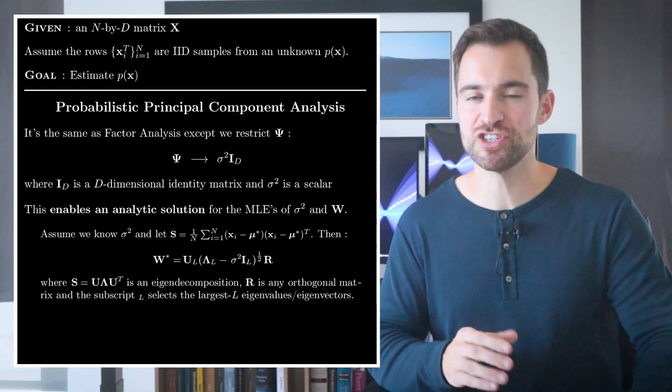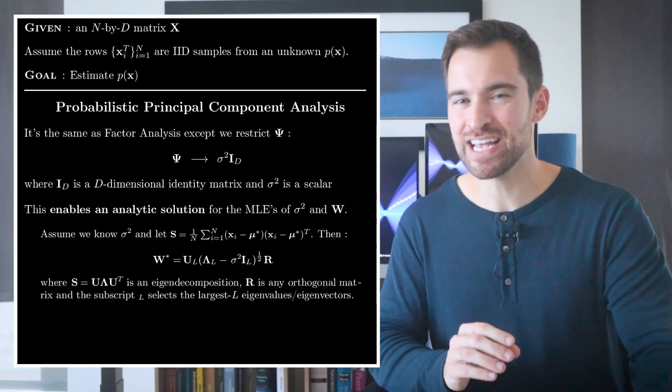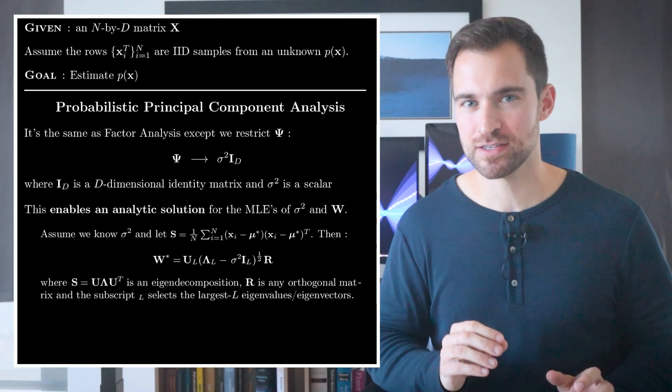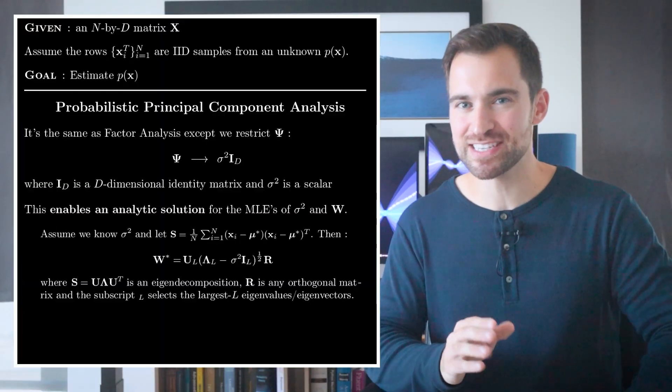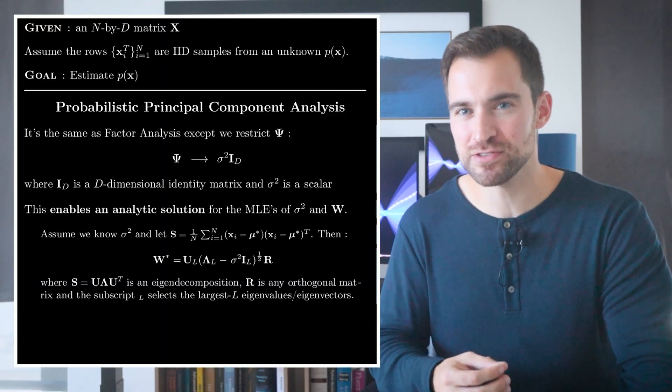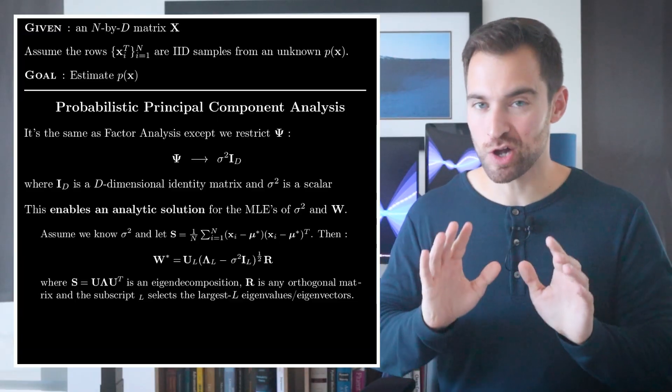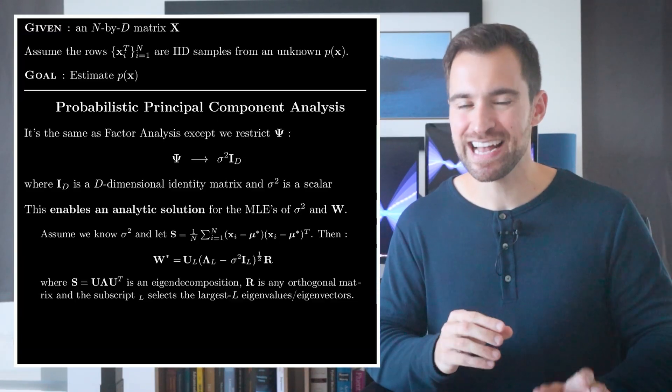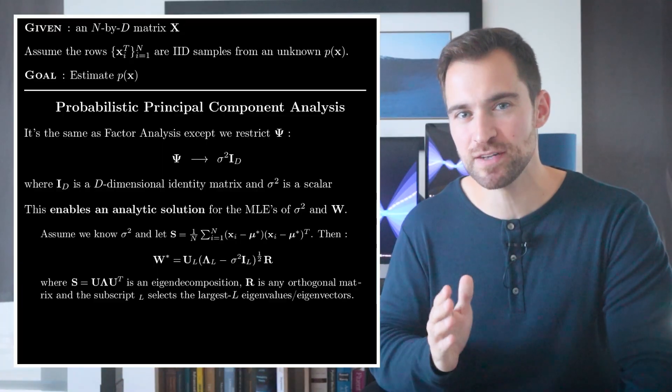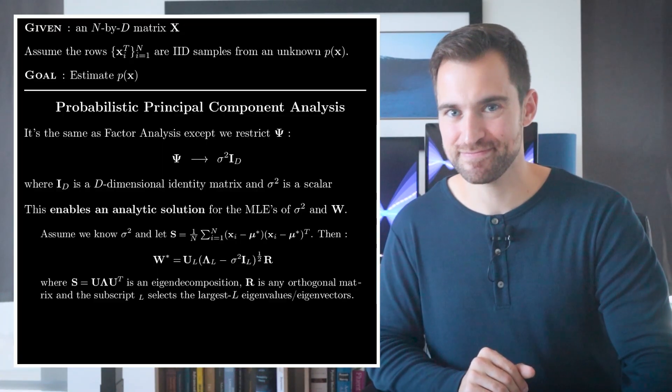First, you run an eigenvalue decomposition on S, and select the L largest eigenvalues and their eigenvectors. Then, essentially, the MLE of w is just those eigenvectors scaled by their eigenvalues after you adjust for the assumed noise variance. Also, an arbitrary orthogonal matrix R is included here to emphasize there is a whole space of w's which maximize the likelihood.